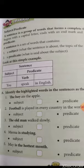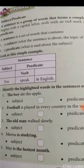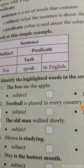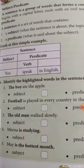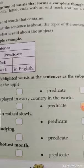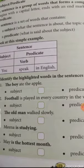Fourth question: Meena is studying. Meena padh rahi hai. Meena subject hai. But the highlighted word here is 'is studying', not Meena. So 'is studying' is the predicate because Meena is the subject. Fifth question: May is the hottest month. May is the subject; 'is the hottest month' is the predicate.